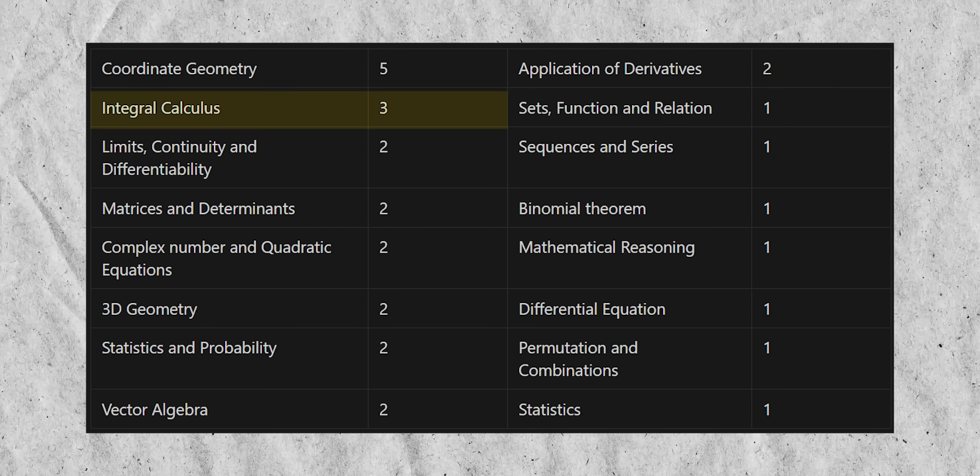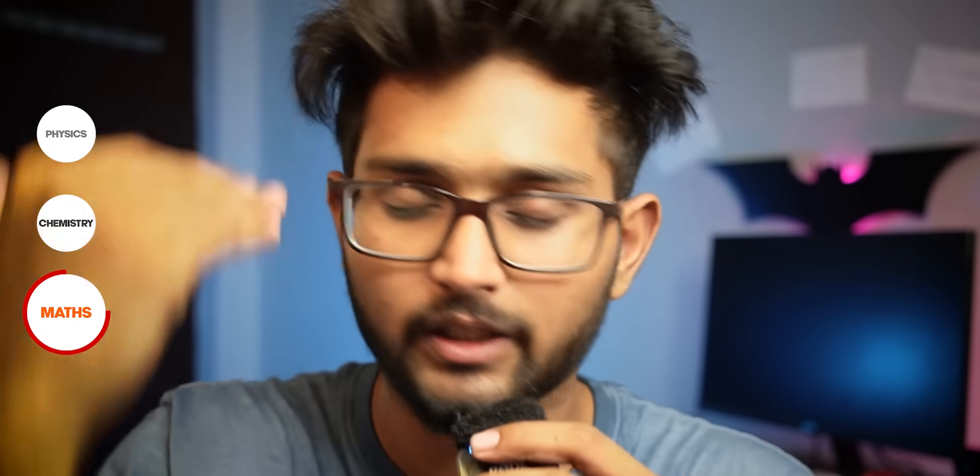Cool? So now you might ask, Tarun, in that case, everyone would be able to solve these chapters. How would I, a person like, you know, a math topper in my class, get competitive advantage above others? Huh? Simple. Calculus. Calculus is the part where questions are a bit lengthy, tricky, tough, whatever you need to call it, but if you want to get competitive edge above others, if you're like a math topper in your class, in that case, do this.